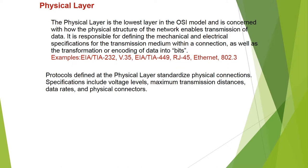The physical layer is the lowest layer in the OSI model and is concerned with how the physical structure of the network enables data transmission. It is responsible for defining the mechanical and electrical specifications for the transmission medium, as well as the transformation or encoding of data into bits. Examples include EIA/TIA-232, V.35, EIA-TIA-449, RJ-45, and Ethernet 802.3.